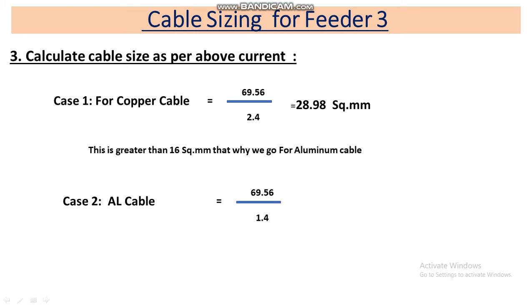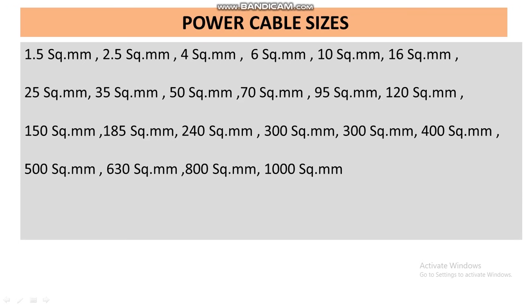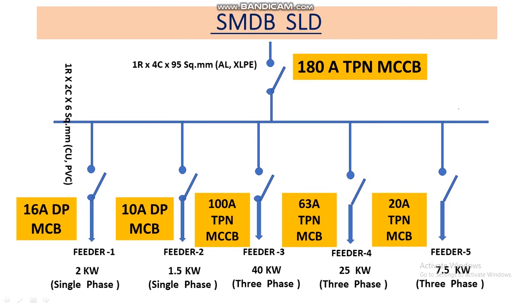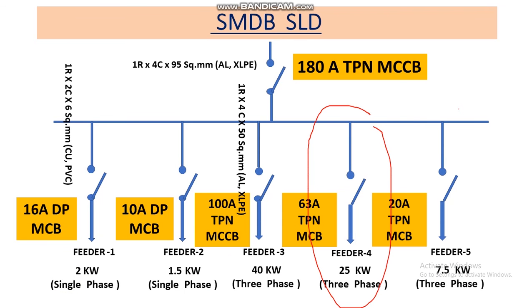For aluminum cable for Feeder 3: 69.56 ÷ 1.4 = 49.68 square mm. Looking at the cable selection chart, 49.68 is near 50 square mm, so we select 50 square mm. Our proposed cable size for Feeder 3 is 1 run, 4-core, 50 square mm aluminum XLPE cable — 4-core because it is a three-phase and neutral system. In this way we can calculate the cable size for all feeders as per load.